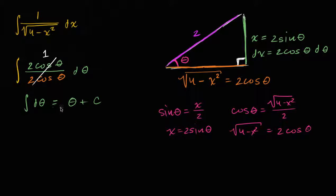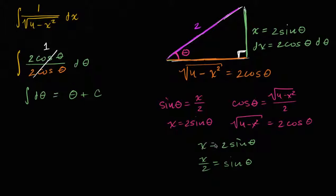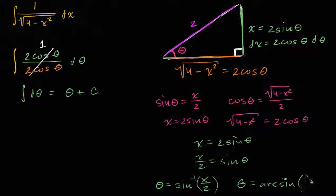This is nice, but we're not done. We want the indefinite integral in terms of x. Since x equals two sine theta, dividing both sides by two gives x over two equals sine theta. So theta equals the inverse sine — the arcsine — of x over two. Therefore the answer is arcsine of x over two plus C.